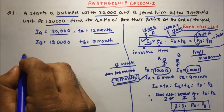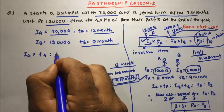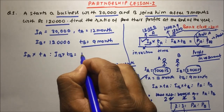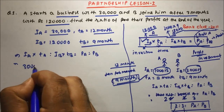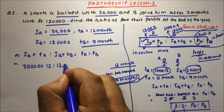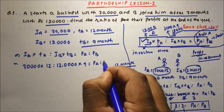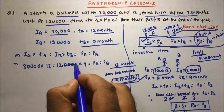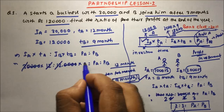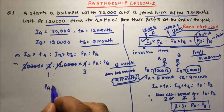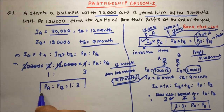We know: Investment of A × Time of A : Investment of B × Time of B = Profit of A : Profit of B. So 30,000 × 12 : 1,20,000 × 9. Cancelling common factors, the profit ratio of A and B is 1 : 3. B's investment was much more than A's, and that's what we get as the profit ratio.